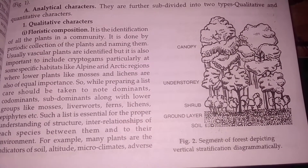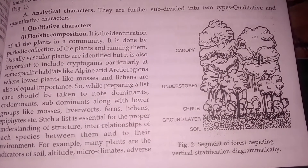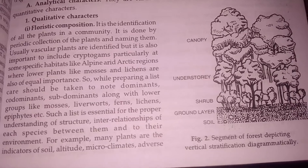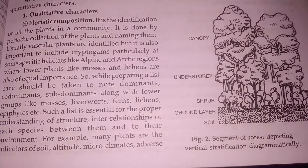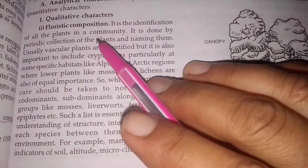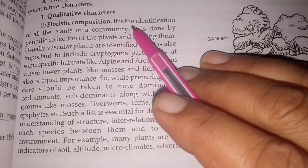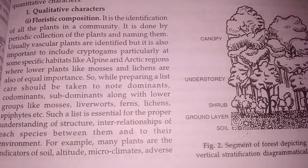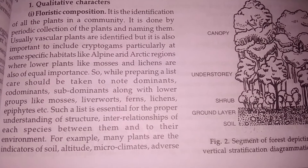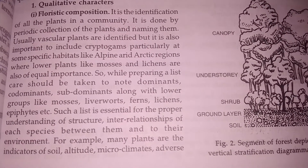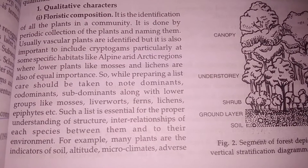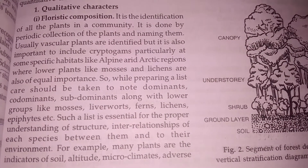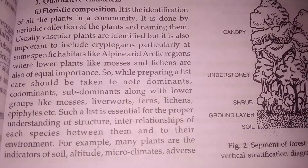We study about the analytic characters, which are further subdivided into two types: qualitative and quantitative characters. First, we discuss qualitative characters. The first is floristic composition — it is the identification of all the plants in the community. Plants are identified in the community at different times, collected periodically, and named.